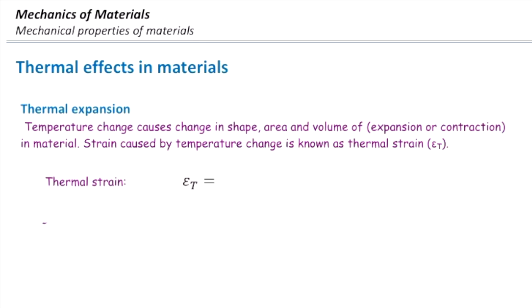We can determine thermal strain from this equation: epsilon sub T stands for thermal strain, and it's calculated from alpha times delta T. Similarly, we can determine thermal deformation, which is the change in length caused by temperature change. We call that delta sub T, and that is simply strain times the initial length: delta T equals epsilon T times L, which equals alpha delta T L.